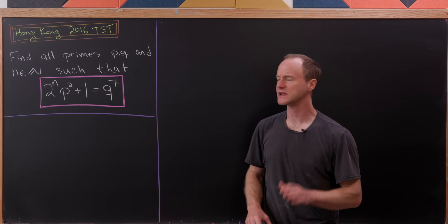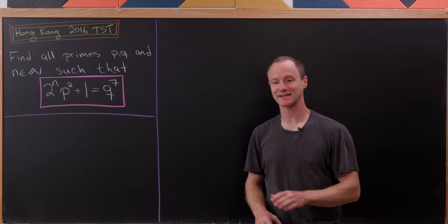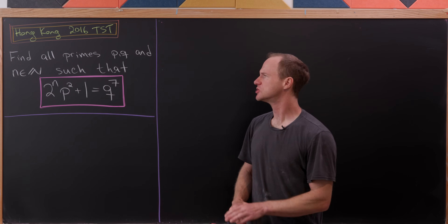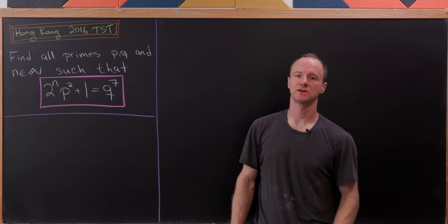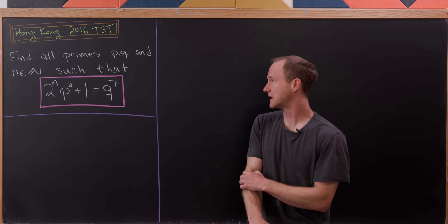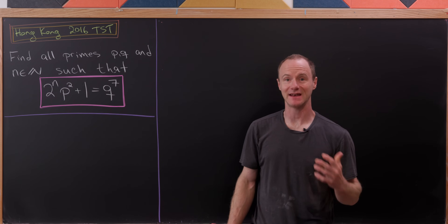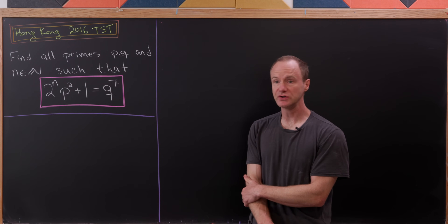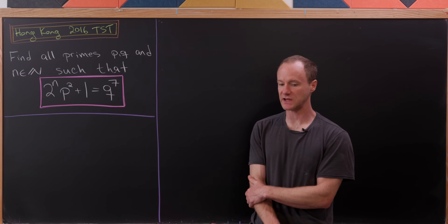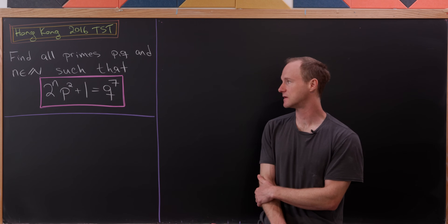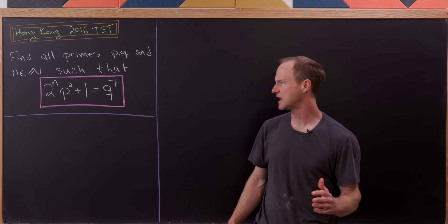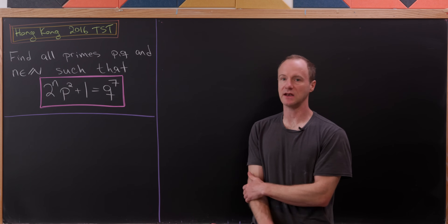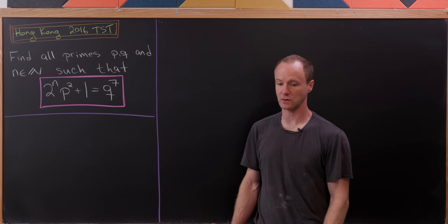Today we're going to look at a really nice problem from a 2016 team selection test for Hong Kong. We'd like to find all prime numbers P and Q and natural numbers N, satisfying the equation 2 to the N times P squared plus 1 equals Q to the 7. Here we're going to take natural numbers to be positive integers, so that means N is bigger than or equal to 1.